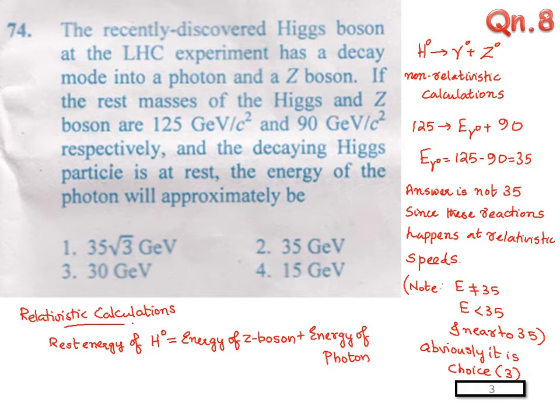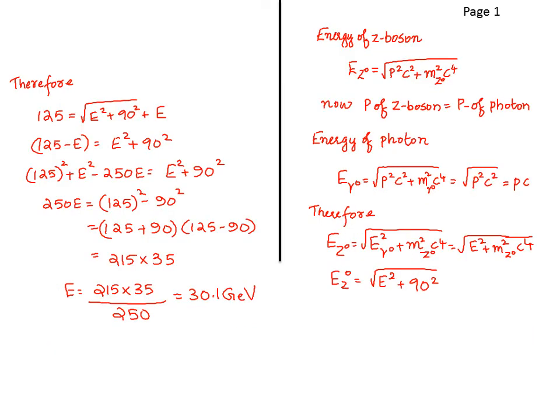But let us find using the relativistic expression for energy. Now, the energy of the Z boson is E is equal to √(P²c² + m₀²c⁴). Now, P of Z boson is equal to P of photon. So energy of photon, E is equal to Pc.